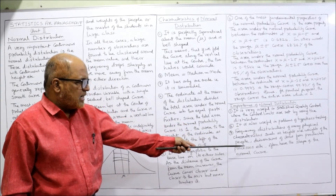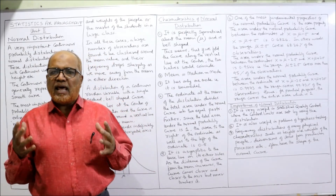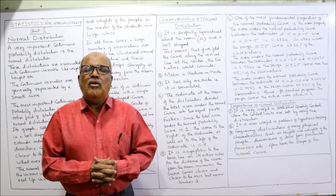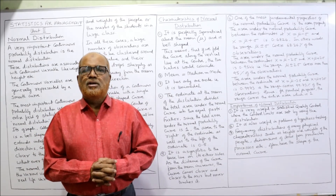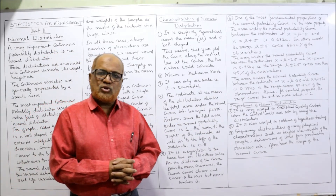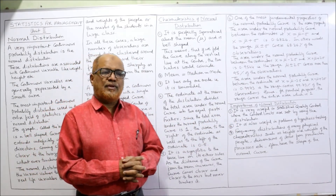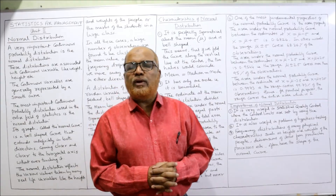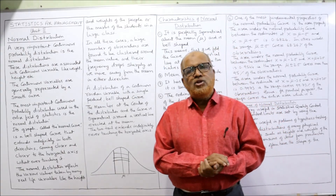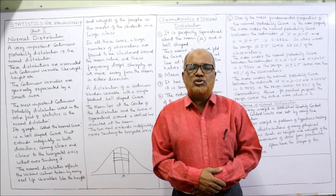Sampling is an important statistical tool and normal distribution is used there as well. Frequency distributions of many physical characteristics such as heights and weights of people, and dimensions of items from production processes, often have the shape of a normal curve. In such cases we can easily find probabilities using this property. This is the complete theory of normal distribution; in the next video we will start solving problems on normal distribution.